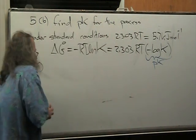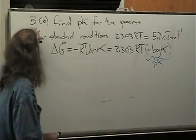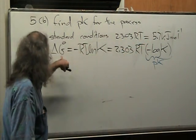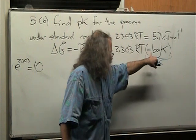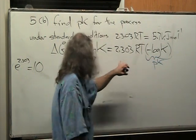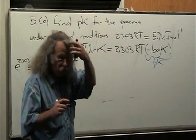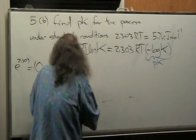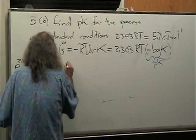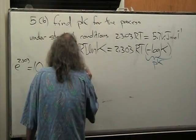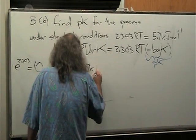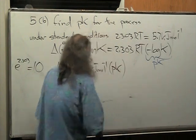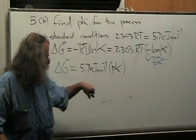And so, now essentially, this part here you don't need to include in your answer. You could just state this and essentially you could even cut to the chase and save more space and just tell me that delta G-naught is equal to 5.7 kilojoules per mole times pk. So you could even skip this step and go right to here.